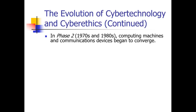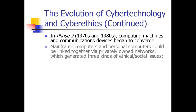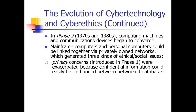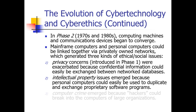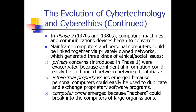In phase two, that would be the 70s and 80s, computing machines and communication devices began to converge — they started communicating with one another. Mainframes allowed for the development of personal computers that could be linked together over private networks, which then generated three kinds of ethical and social issues. First, privacy concerns grew because confidential information could easily be exchanged between networked computers. Second, intellectual property issues emerged because personal computers could easily duplicate and exchange proprietary software programs. Third, computer crime emerged because hackers could break into computers of larger organizations and steal information.